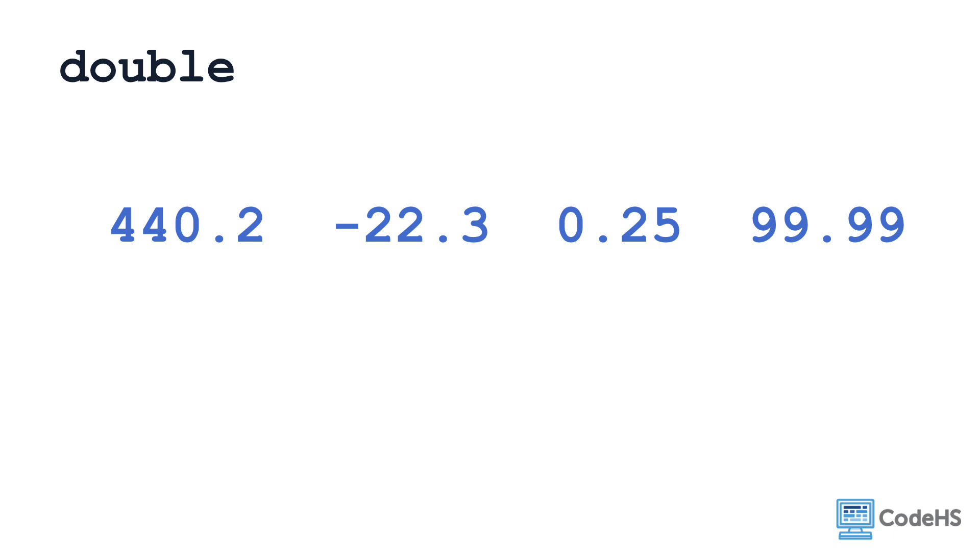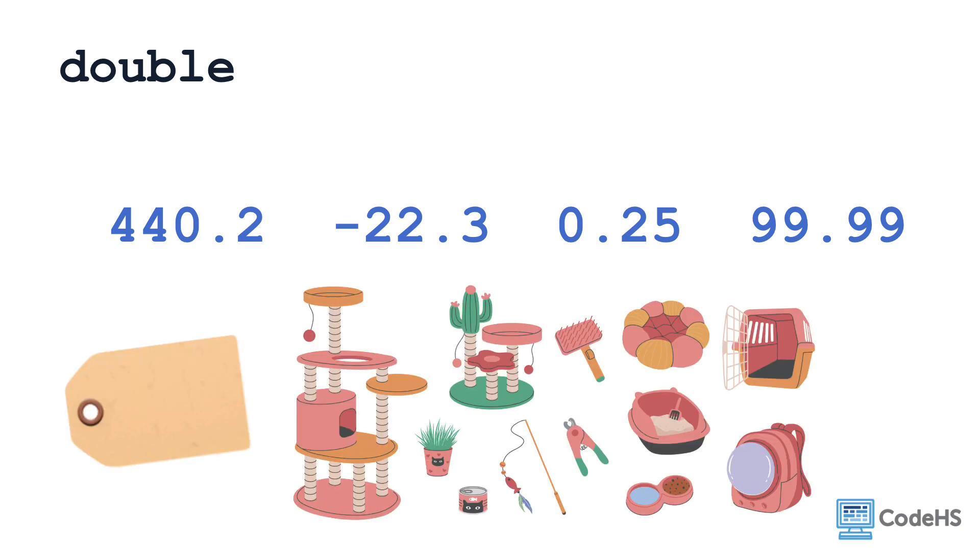The double data type stores numbers with decimals, such as 440.2, negative 22.3, and 0.25. As an example, you would use the double data type to store the price of the accessories when getting a new cat. Both ints and doubles store numerical values, and you'll learn later on how you can perform calculations like addition and subtraction with their values.